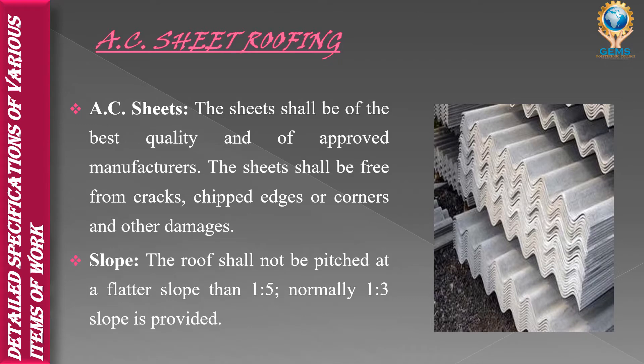The first topic is AC sheet roofing. AC sheet means asbestos cement sheet. It is a building material in which asbestos fibers are used to reinforce thin rigid cement sheets. You can see the image — this is called an AC sheet. These are the details of AC sheets.